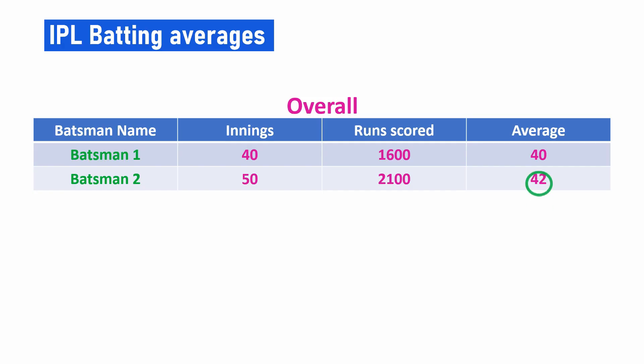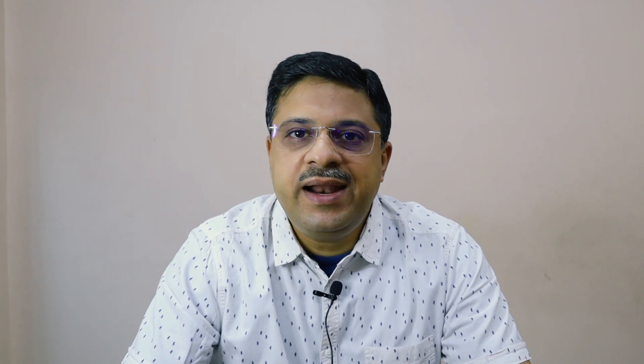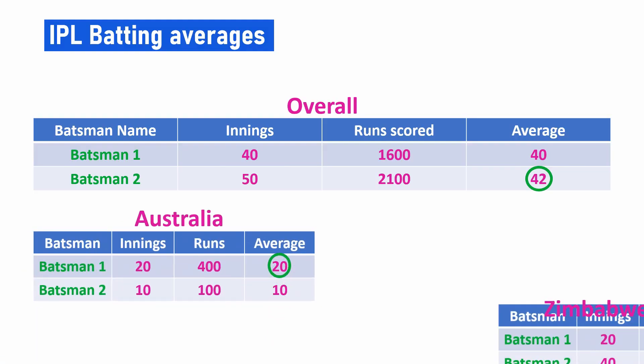A certain Batsman 2 was found to be a favorite based on his batting average that was slightly better than Batsman 1, and incidentally he would have fetched a higher auction price. However, on closer examination of their batting performances, it was in fact Batsman 1 who was relatively a better performer. It was simple coincidence that Batsman 2 had played more matches with a relatively weaker team and managed to score more.